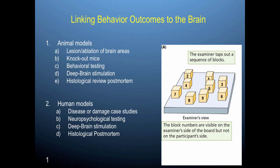Here's an example of a neuropsychological test — specifically an ordering test. The examiner taps out a sequence of numbered blocks (1 through 9), and the participant on the other side, who cannot see the numbers, must memorize the sequence in the correct order. This is an example of a neuropsychological test that assesses an individual's ability to remember information and keep it in the correct order.